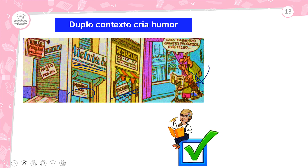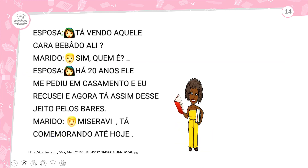Mais um exemplo de duplo contexto e humor. Um diálogo de marido e esposa: a esposa diz 'Tá vendo aquele cara bêbado ali?' O marido pergunta quem é. Ela responde: 'Há 20 anos ele me pediu em casamento e eu recusei, e agora tá assim pelos bares.' O marido reage: 'Miserável, tá comemorando até hoje!' A mulher pensava que ele bebia por tristeza de tê-la perdido; o marido interpretou que ele comemorava por não ter casado com ela. As anedotas fazem uso do duplo sentido, causando humor.